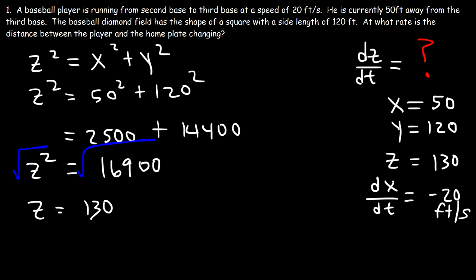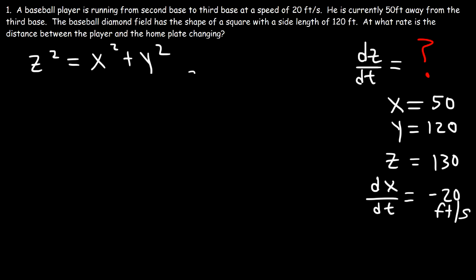So now that we have z, we can calculate dz/dt. Let's go ahead and find the derivative of this equation with respect to time. The derivative of z squared is 2z dz/dt, and the derivative of x squared is 2x dx/dt. The derivative of y squared will not be 2y dy/dt. dy/dt is 0.